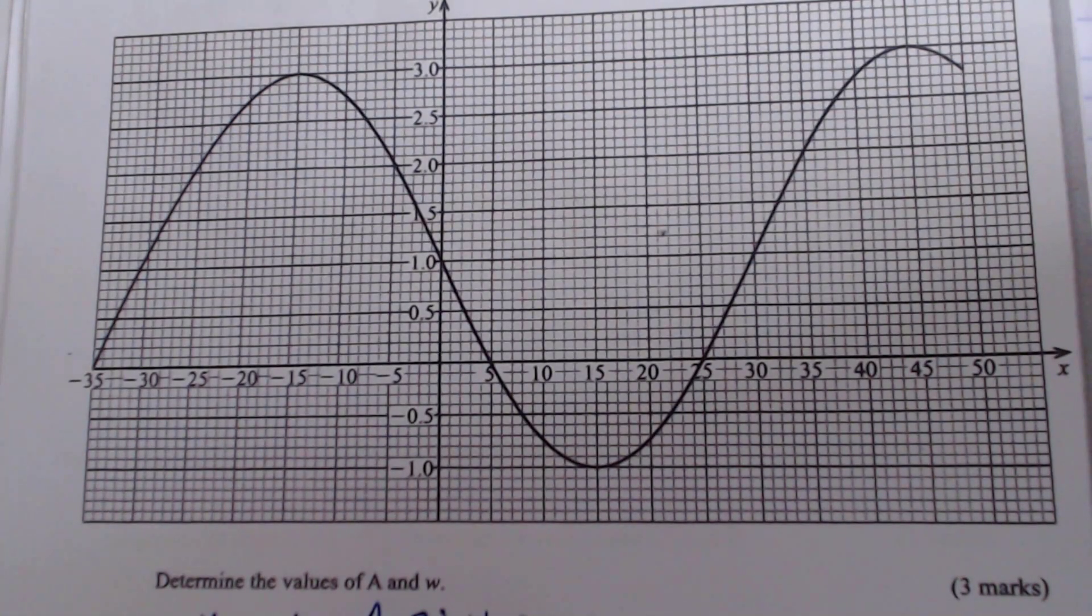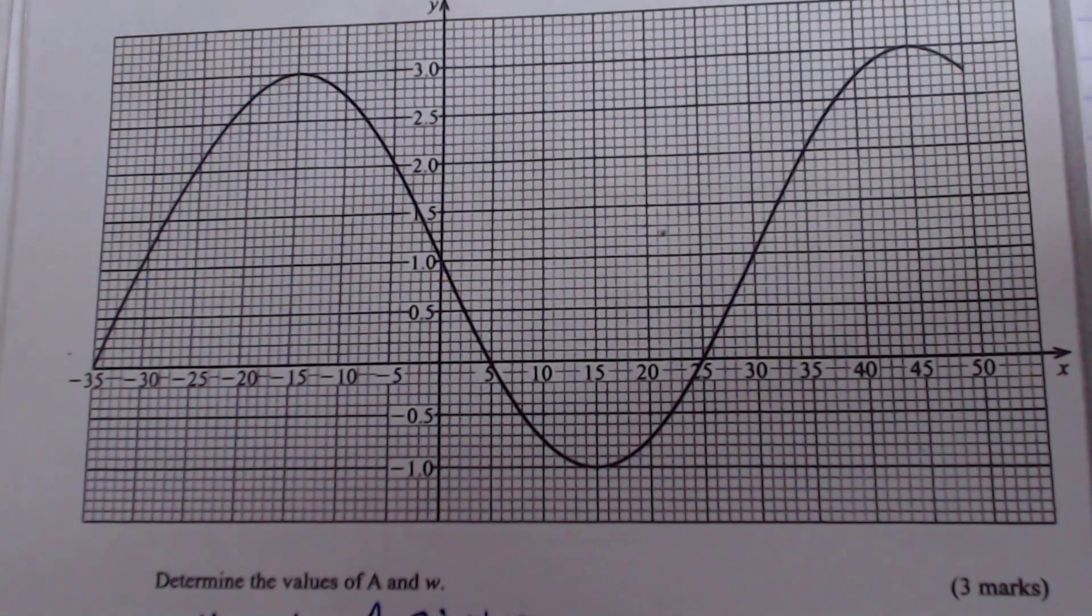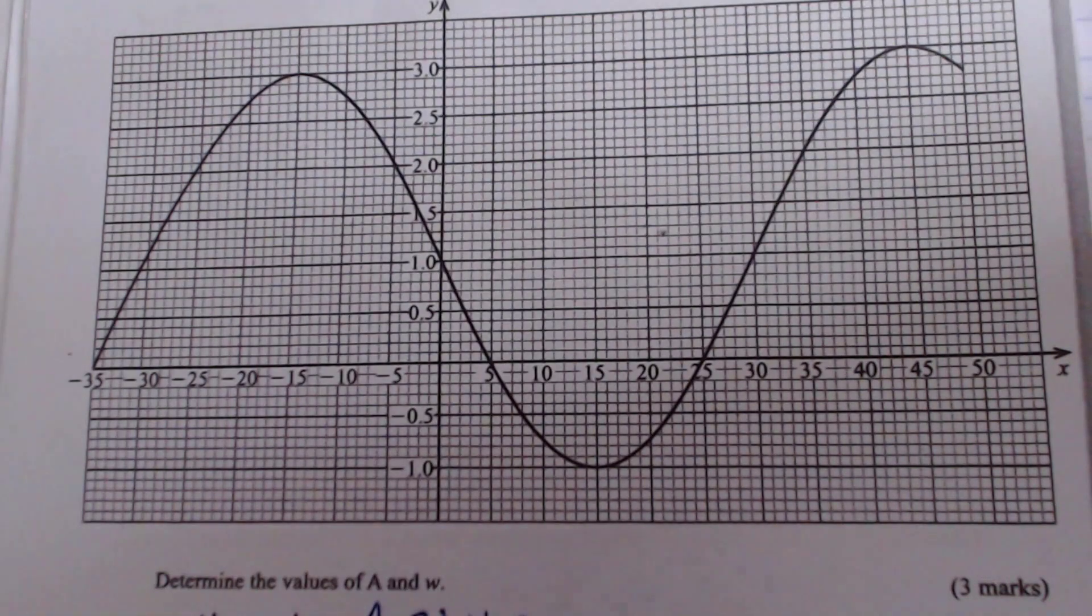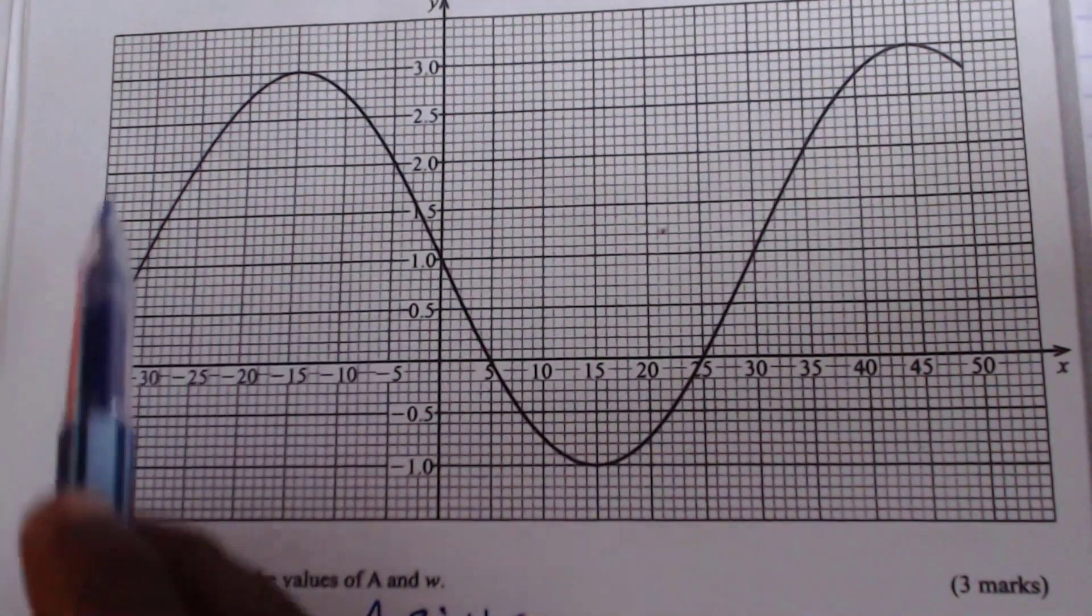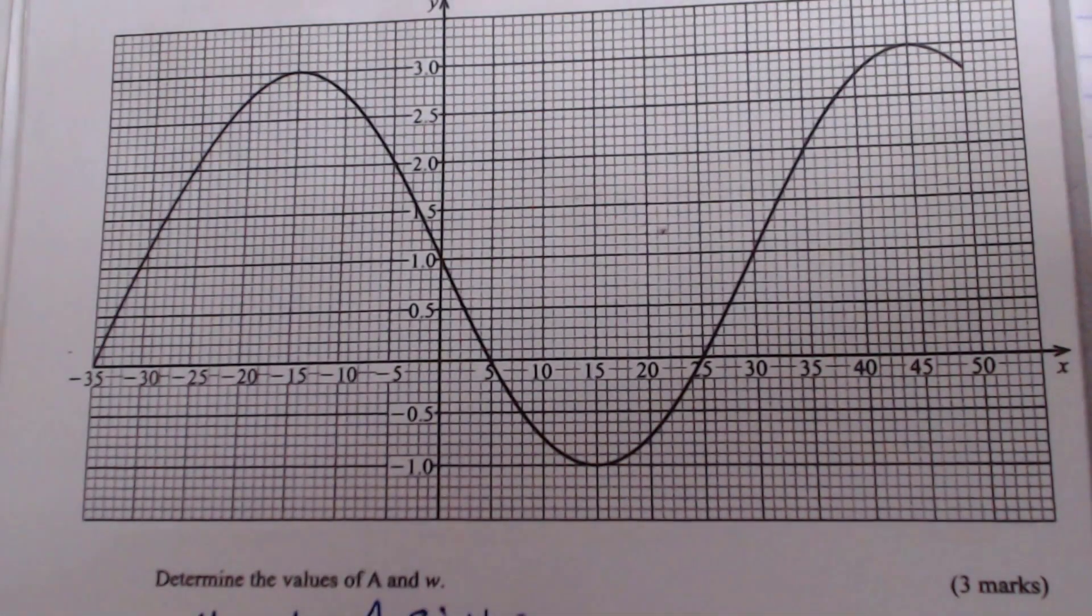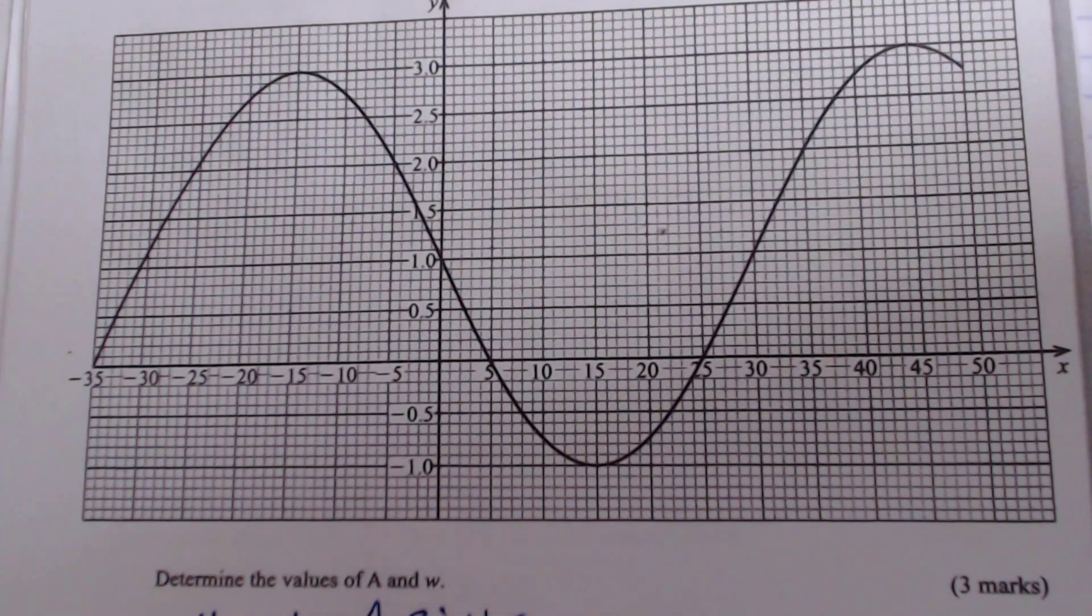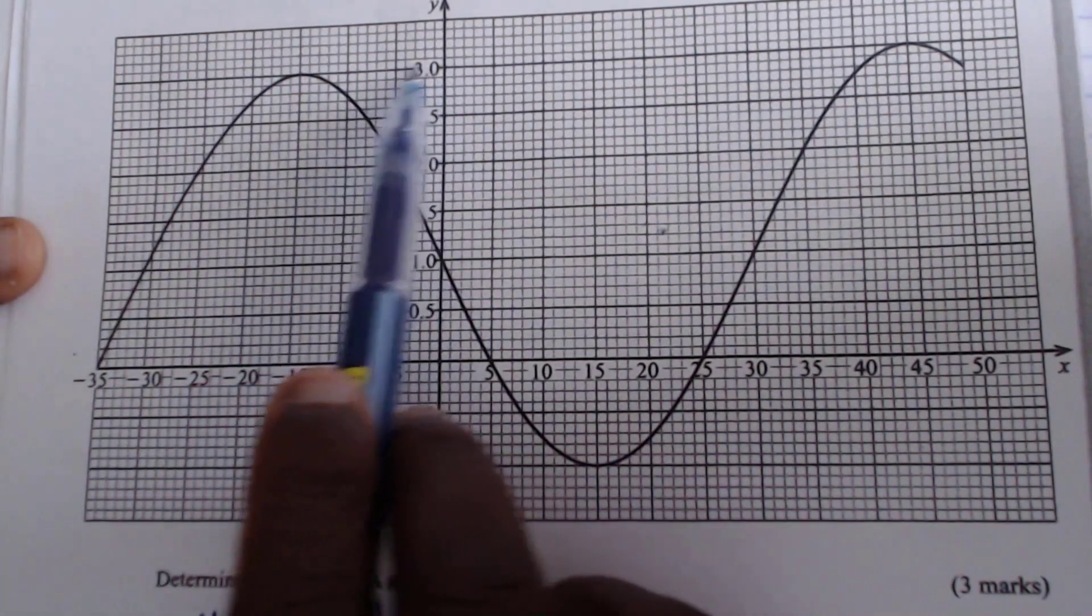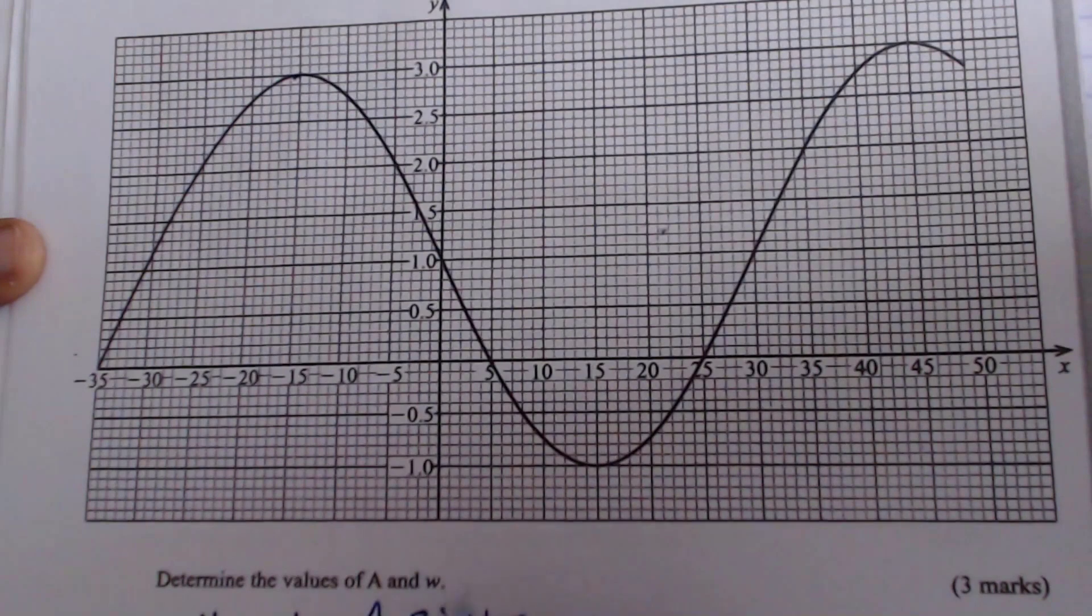So using this curve, you're supposed to find the values of a and w. Don't forget that a is the amplitude and we need to know how we get the amplitude from this curve. The amplitude is the highest point the curve reaches. And when you look at this wave, to get the amplitude, this is how we do it. We check the highest point of that curve, the highest point, which is 3. It is 3, you can see 3, that is the highest point.